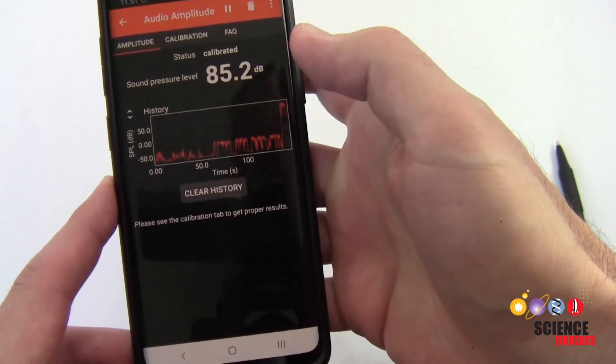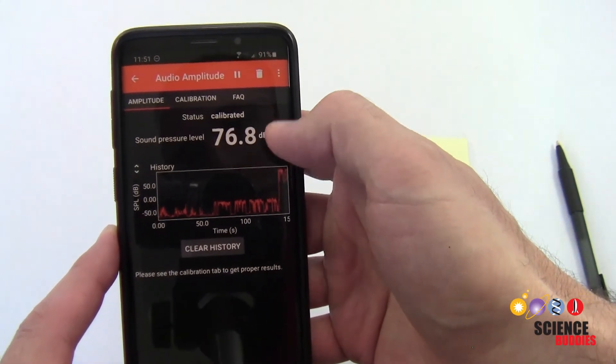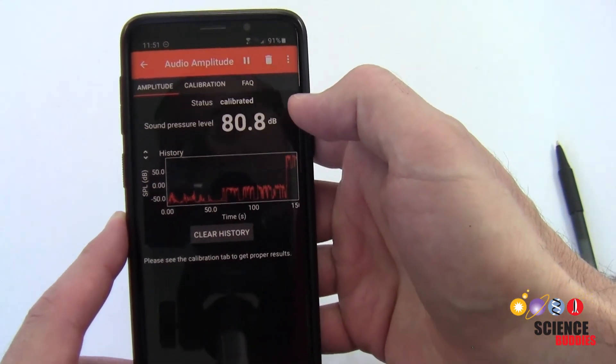When I now go back over to the amplitude tab, I am now getting numbers between 0 and 100, like I would expect.